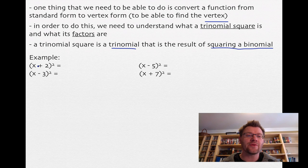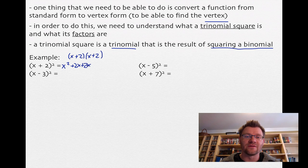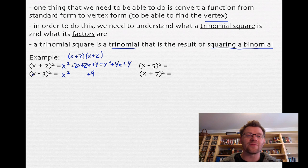For example, if I square x plus 2, I get x squared plus 4x plus 4. Using the FOIL principle: x times x is x squared, x times 2 is 2x, 2 times x is another 2x, and 2 times 2 is 4. There's a faster way: square the first term to get x squared, square the last term, and multiply the two terms together and double it. So x squared minus 6x plus 9, and these are all trinomial squares.